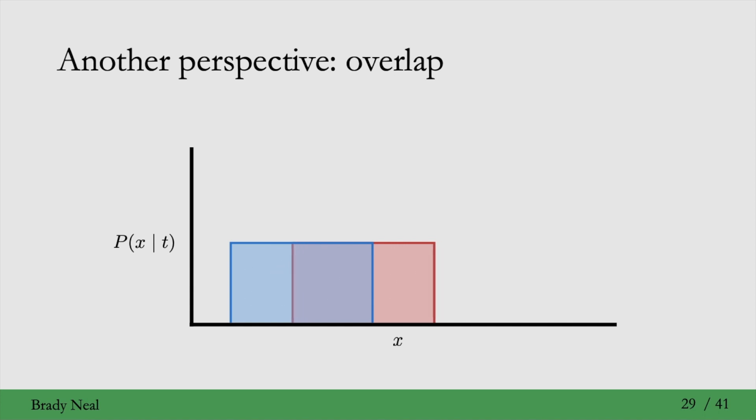Similarly, if they completely overlapped—if these two conditional distributions, conditional covariate distributions given treatment overlapped completely—then we have no positivity violation. And this is what we want in general in order to have identifiability. And overlap is just another way to look at the positivity assumption. This is just giving you a bit more intuition, a bit more understanding of this assumption.